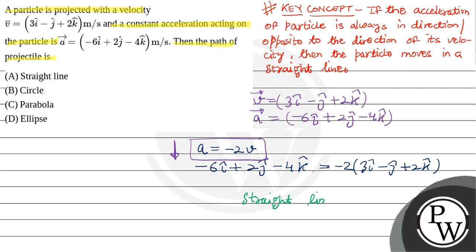We can see that the acceleration vector is always in opposite direction of velocity vector. This means when any particle moves with velocity and its acceleration is in opposite direction, it will follow a straight line and the velocity will decrease.